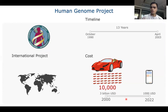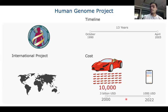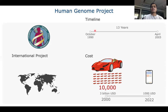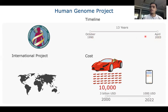For this project, six countries — the US, UK, Japan, France, Germany, and China — with 20 different institutions participated to complete it. The project was started in October 1990, and by April 2003 it was completed — taking a long 13 years to complete human genome sequencing.